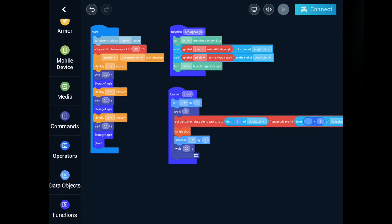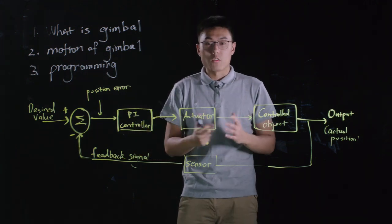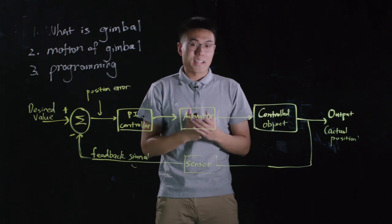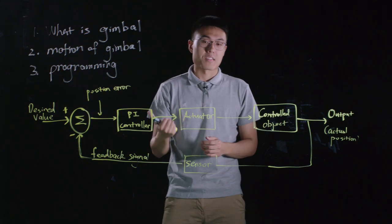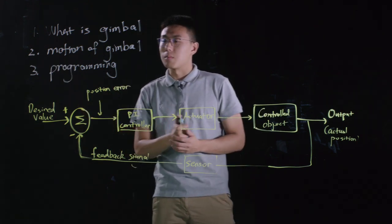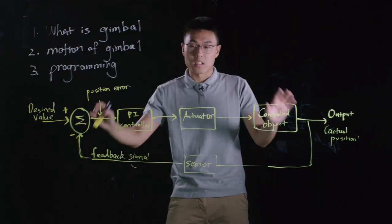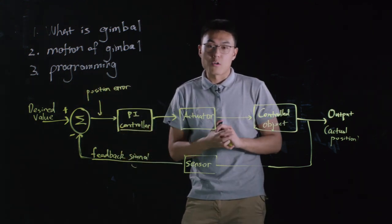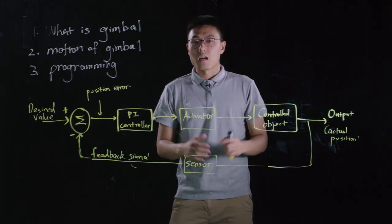Run the program to hit the target visual markers. So we've done the programming part as well. Now let's do a recap for today's lesson. We learned what a gimbal is — there are three types: fixed gimbal, motorized gimbal, and stabilized gimbal, which is used on our S1. Secondly, we learned about the motion of the gimbal by introducing three different coordinate systems and the PID control technology applied on gimbal control. And in the end, we did some programming to realize the target practice project. This is all for today's lesson. I will see you next time.